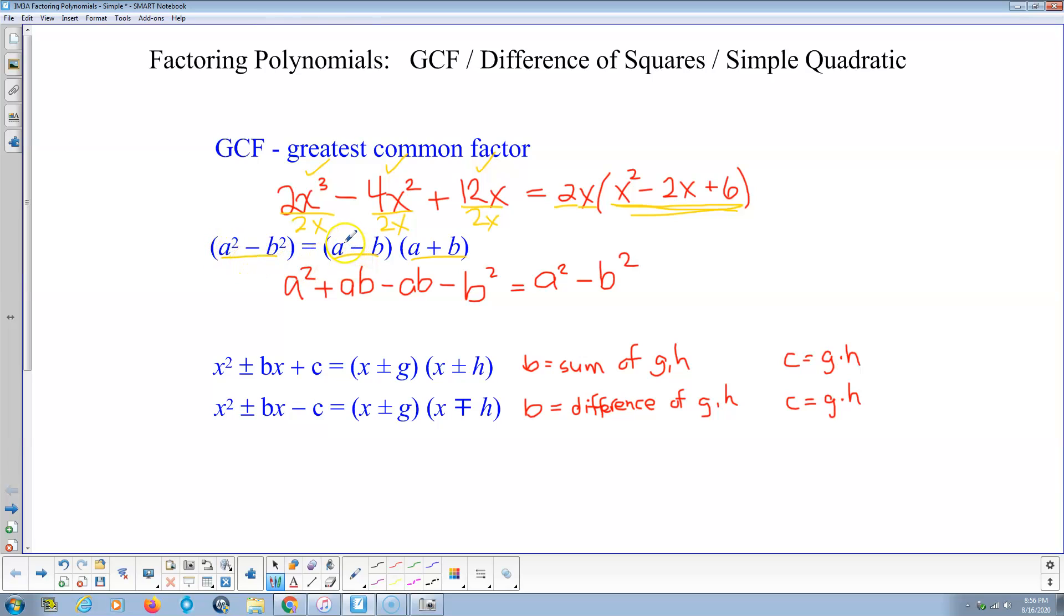So notice what happens when I distribute. A times A is A squared. A times B is positive AB. Negative B times A is negative AB. Negative B times B is negative B squared. These guys being added are exact opposites, so they cancel and go away. That's why we get a binomial. Very special form. We use this form all the time. Really need to know that.